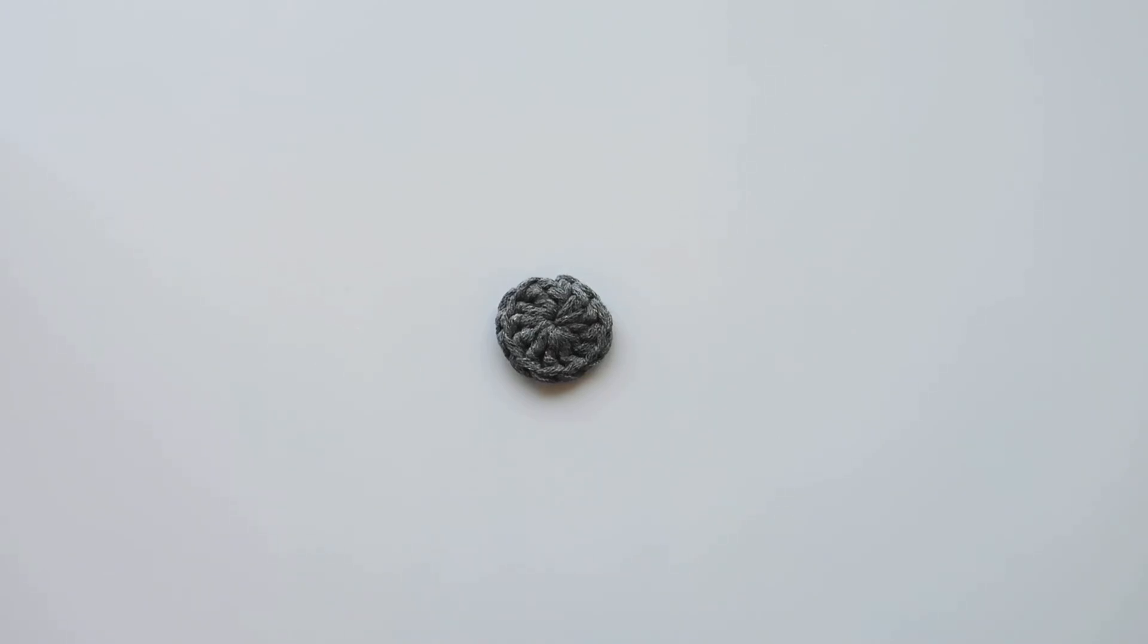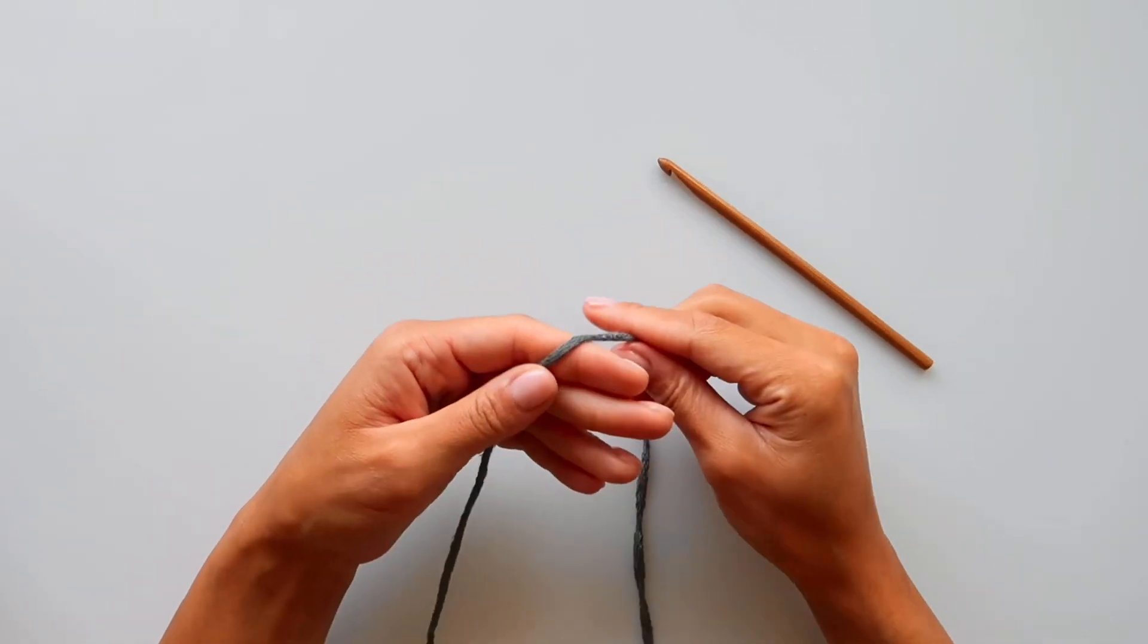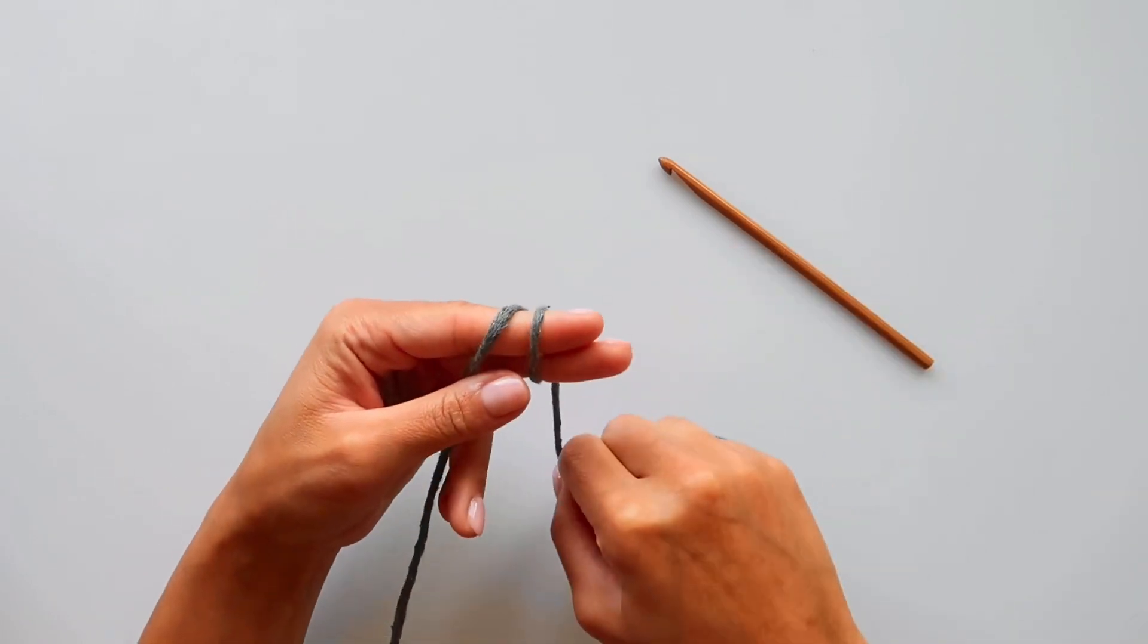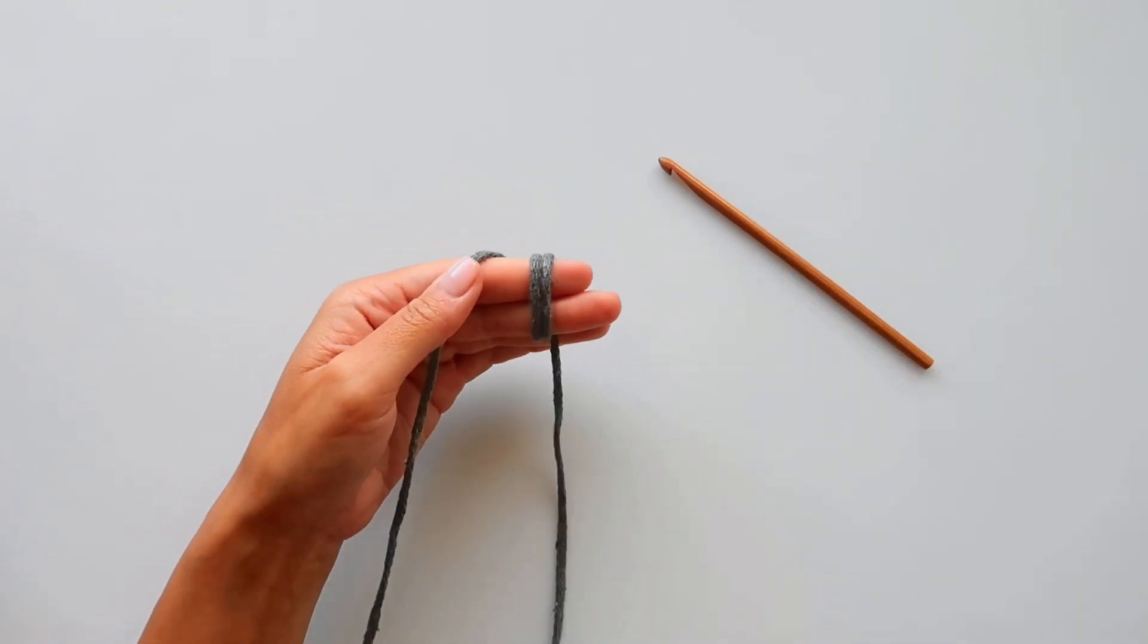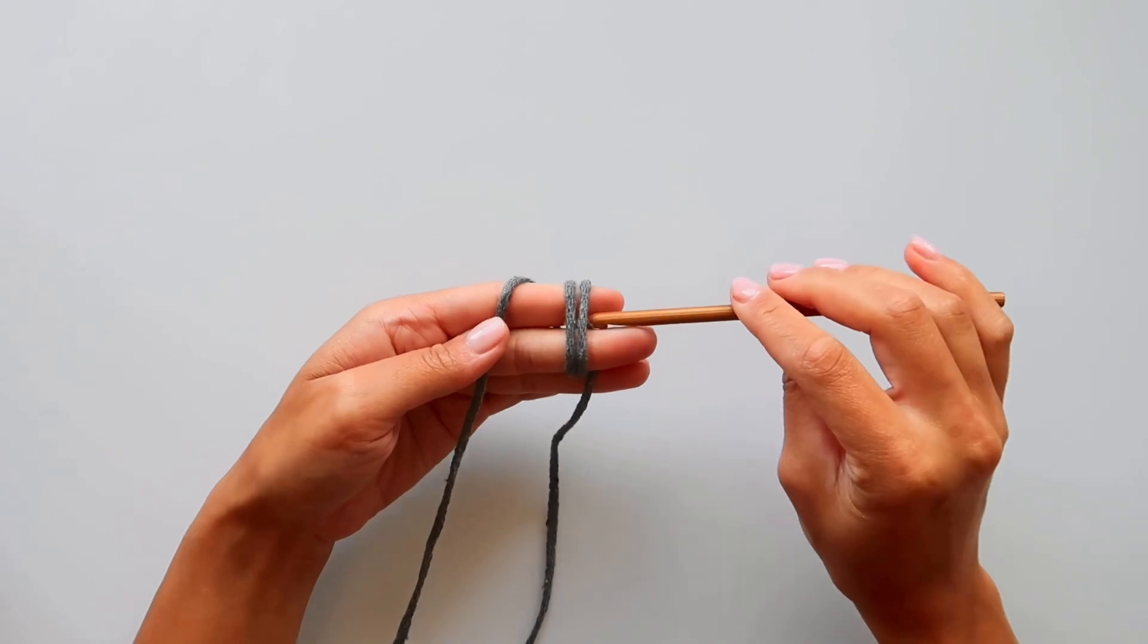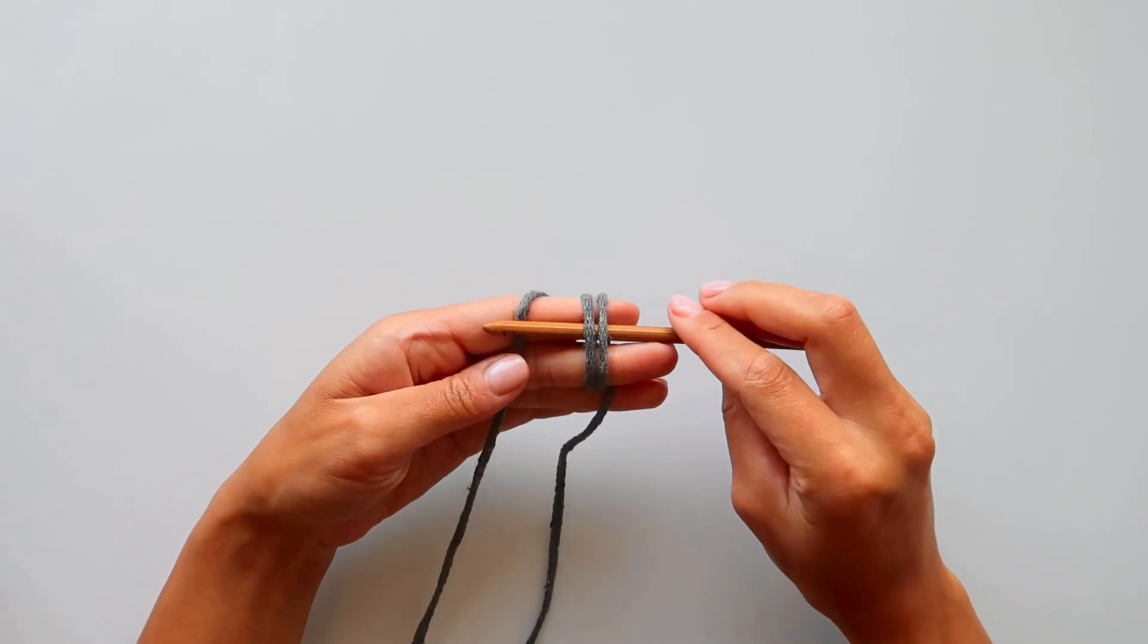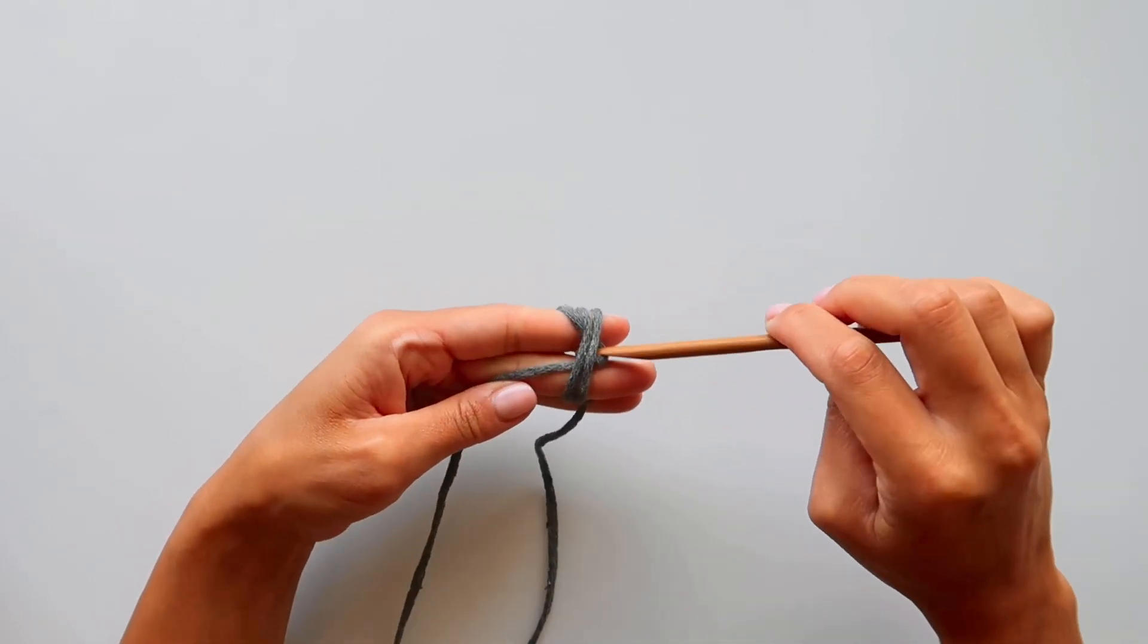This is how you make the magic ring with double crochets. I will start by wrapping the yarn two times around my fingers like this, and with my hook I will go under the first line of yarn and I will grab the second and pull through.